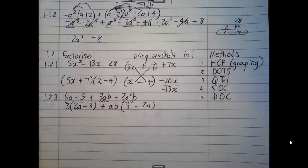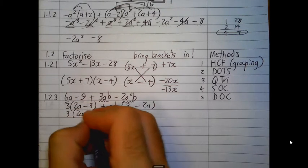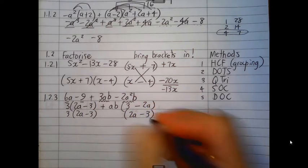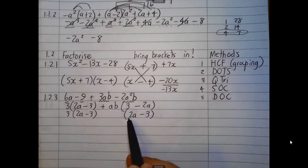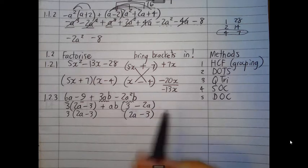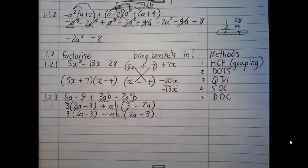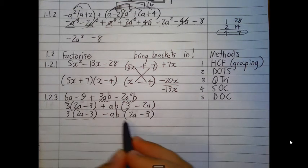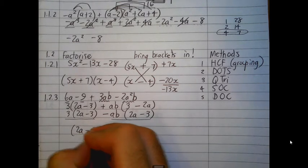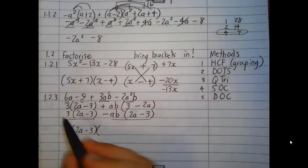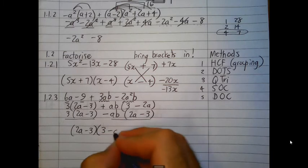However, looking at my answer as it stands, we need to do a bit of work. Because ideally, I want this bracket to be the same as that bracket. So, if I choose to leave this bracket as it is, and I want this bracket to become 2a minus 3, it requires me to take out a negative sign from this bracket. I'm changing this negative sign, negative 2a, is now a positive 2a. This positive 3 is now a negative 3, requiring this positive ab to become a negative ab. At this stage, we've got 1, 2 terms. Is there something common between those two terms? Yes. 2a minus 3, the bracket, is common. And what remains? 3 remains in this term, and negative ab remains in that term.